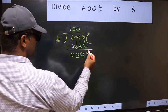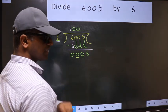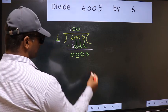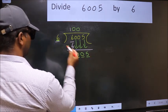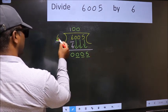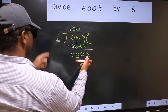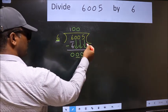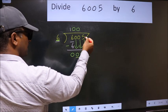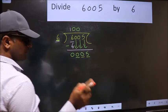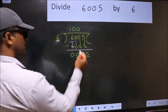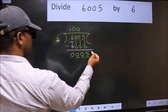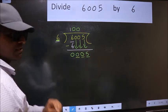After this step, the mistake happens. And the mistake is this. Here we have 5 and here 6. 5 is smaller than 6, and we don't have any more numbers to bring it down. So, what many do is they directly put dot and take 0.